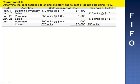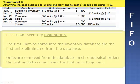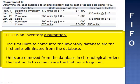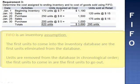Requirement 3 asks us to determine the cost assigned to ending inventory and cost of goods sold using FIFO. The FIFO method is one of the inventory assumptions: it is assumed that the first unit to come into the inventory database is the first unit eliminated from the database. This may or may not represent the actual flow of units — it's simply an assumption. Units are removed from the database in chronological order; the first units to come in are the first units to go out.